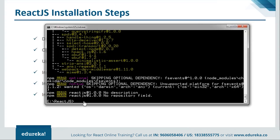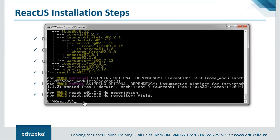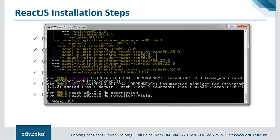Next we have to install React. We'll run npm install react, along with react-dom, and save. Once that's done with the React installation, we'll move on and install Babel. We'll run npm install for the Babel packages. Let it get installed. Now we are done with all our modules and good to go with coding.